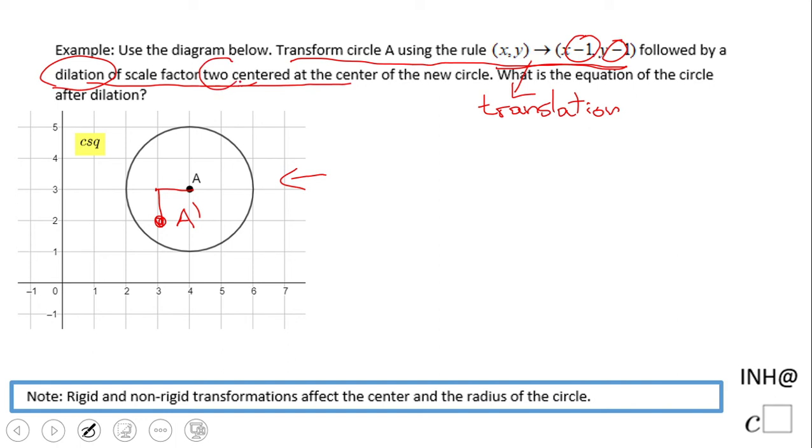Then we dilate by a scale factor of two. The original radius, if you look, is two. That needs to be enlarged because of the scale factor of two. So the original radius is two, and the new radius will be two times two, which equals four.